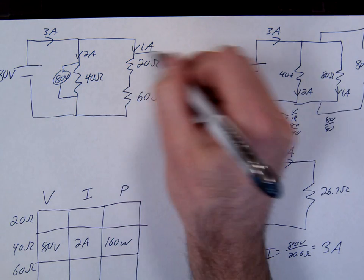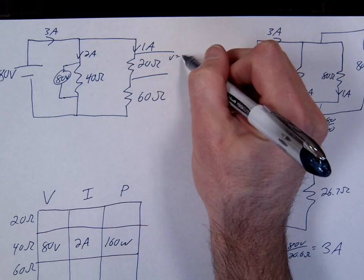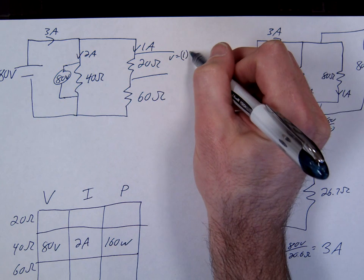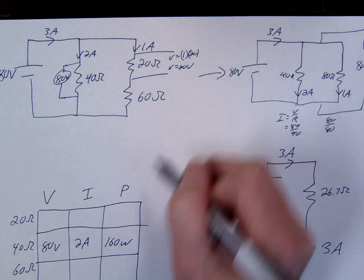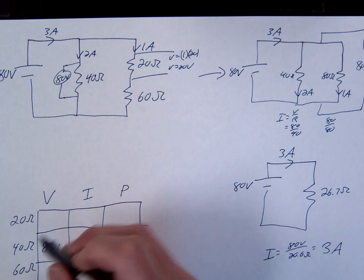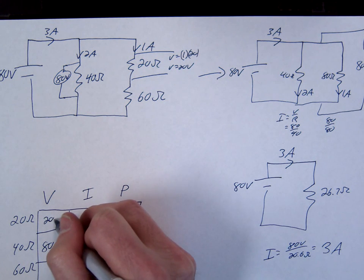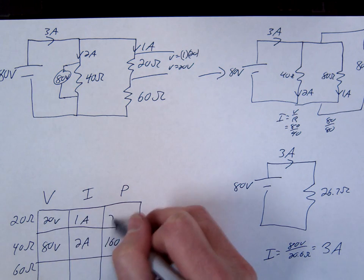We know the current through these, so we can now find the voltage. V equals I times R. 20 volts. So the 20 ohms is 20 volts, 1 amp, 20 watts.